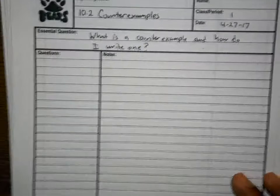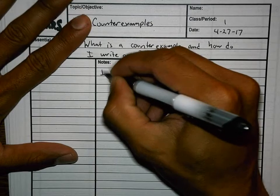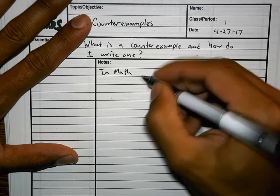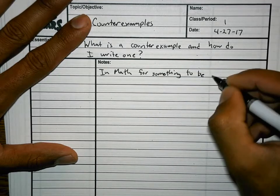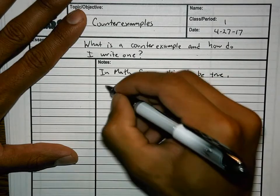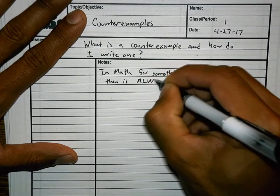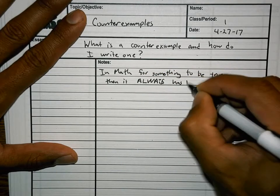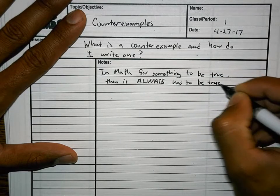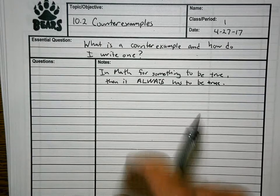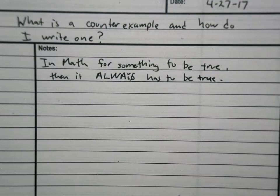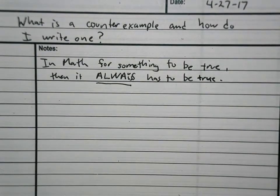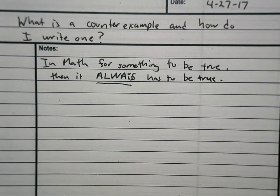Let's start off with the word or this statement in math. For something to be true, then it always has to be true. In math, for something to be true, then it always has to be true.